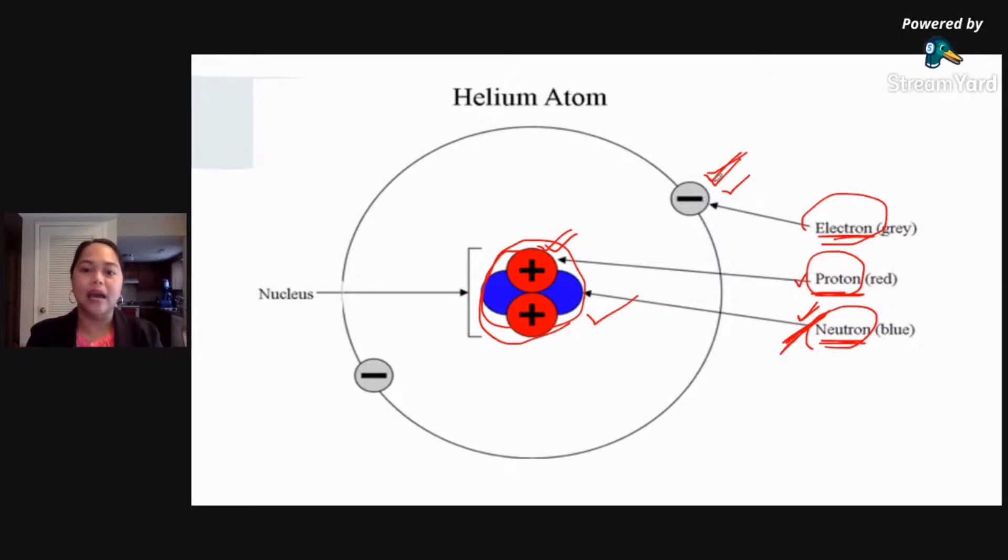Now, again, as I have mentioned, whenever there is chemical bonding, whenever the charge of your atom would change, it is the electron that plays part on it. So, for example, in this case, nakikita ninyo, meron tayong dalawang electrons, meron din tayong dalawang protons. So, the charge is negative 2, and then you also have positive 2. So, that means your helium atom here is stable.